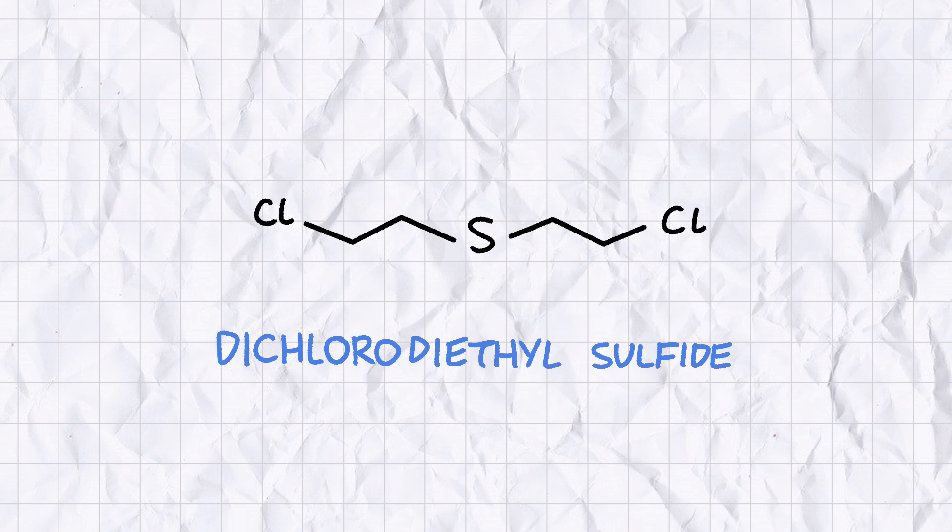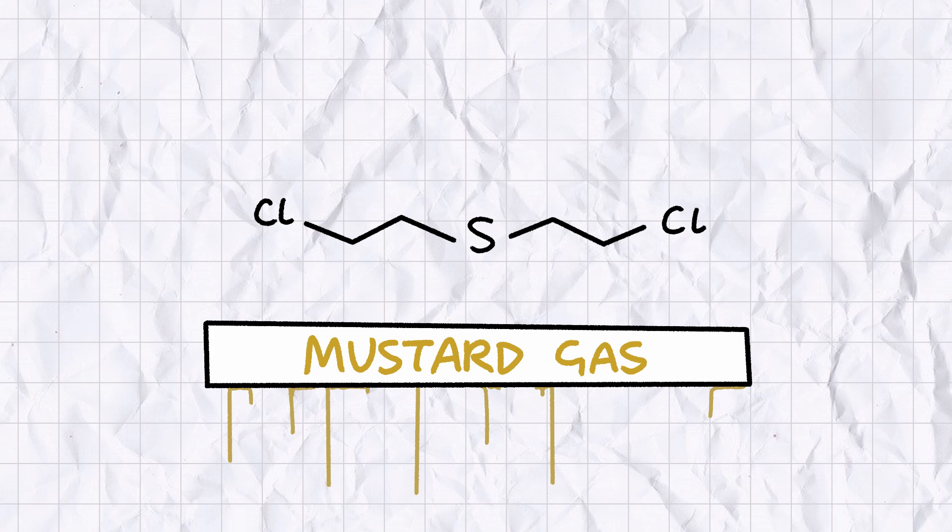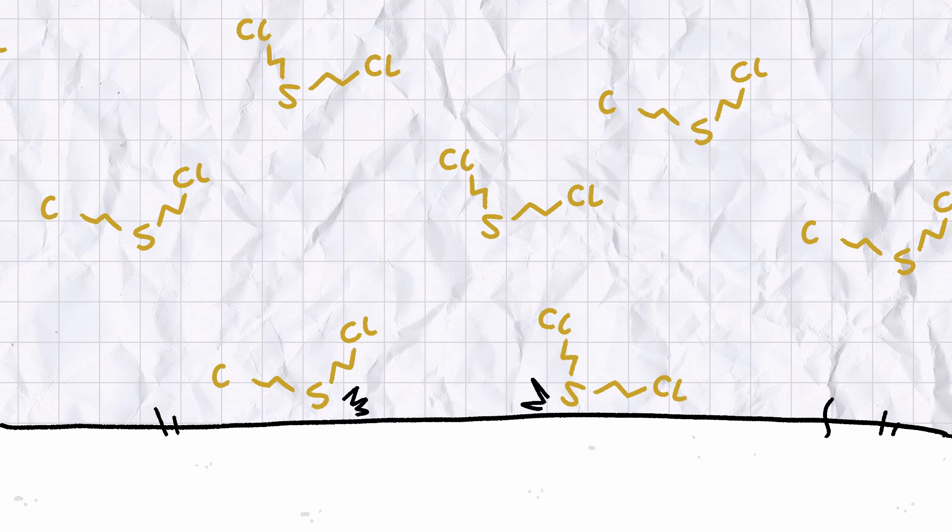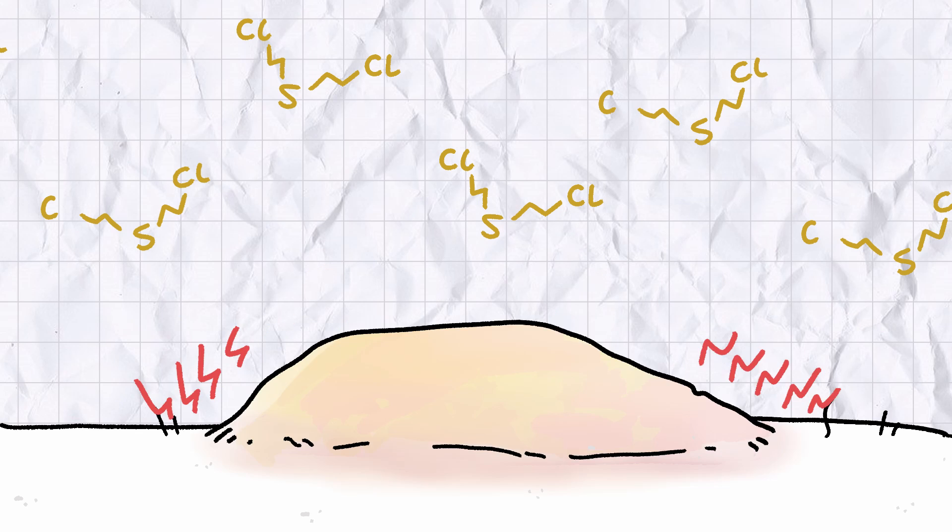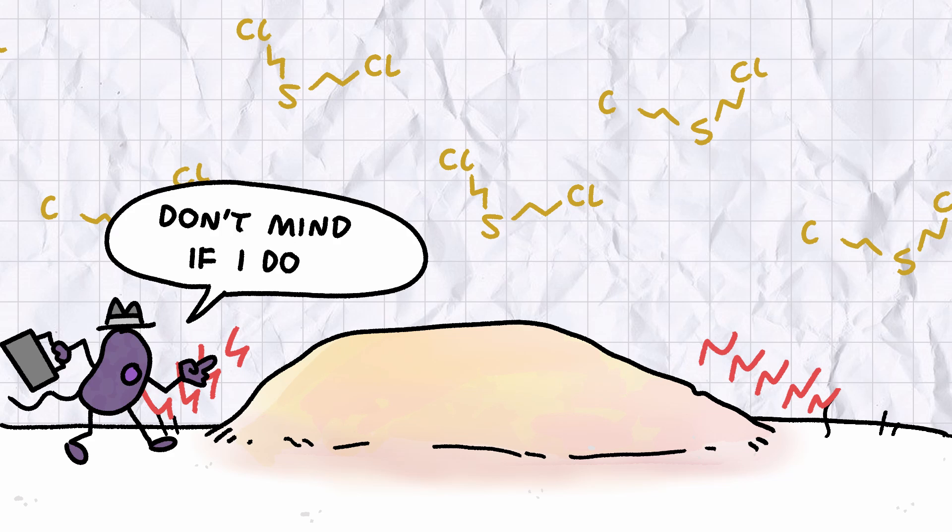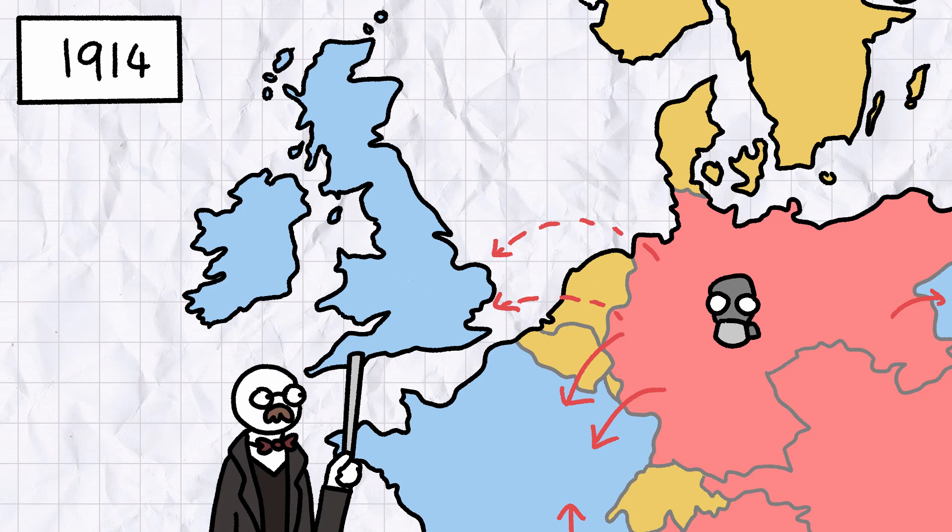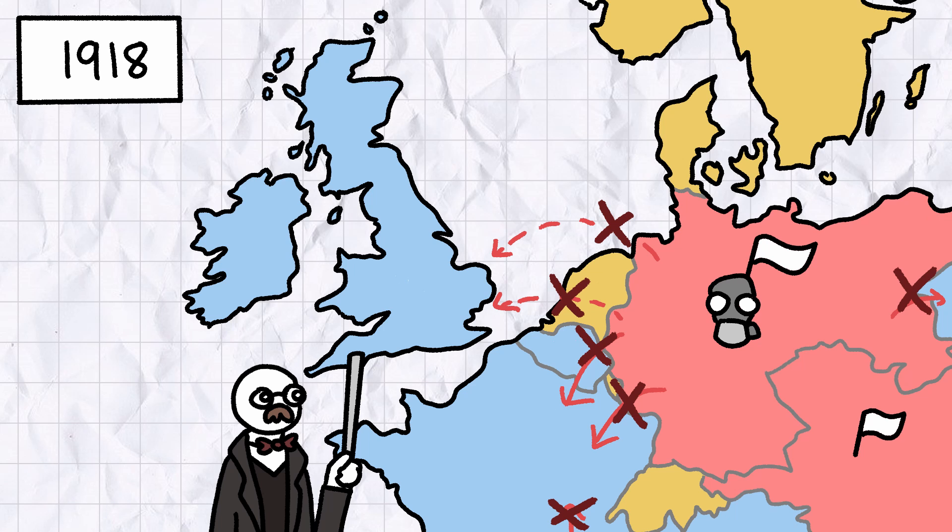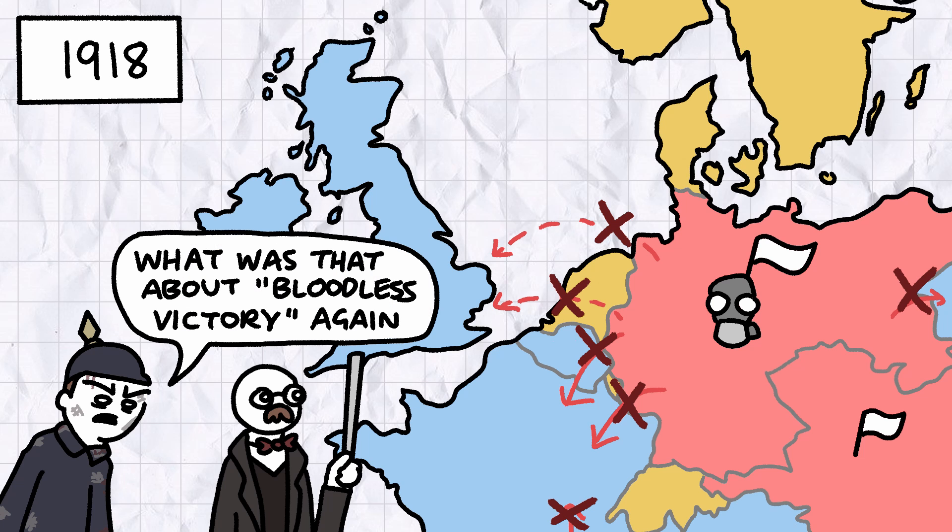One such example is dichloro-diethyl sulfide, known to you and me as mustard gas. While exposure was rarely immediately fatal, mustard gas would blister the skin on impact, leaving the victim to die a slow and painful death as their gaping sores gave way to fatal infections. Haber was convinced chemical warfare would force the allies into quick surrender, and usher in as bloodless a victory as possible for the Central Powers. But Haber was wrong, and when Germany surrendered in 1918 after four grueling years of warfare, his reputation would never recover.